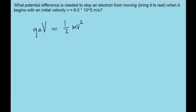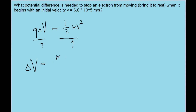Now we want to solve for delta V here — we're looking for the potential difference. So I'm just going to divide both sides of this equation by q, the charge, and we find the potential difference is equal to mv squared divided by 2 times the charge. I've just brought the 2 from the one-half into the denominator to make it look cleaner.